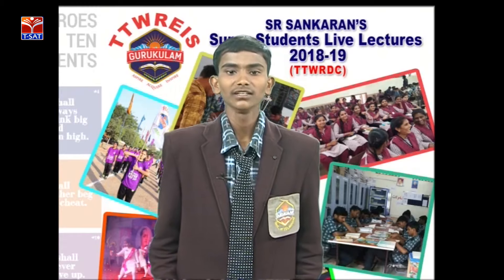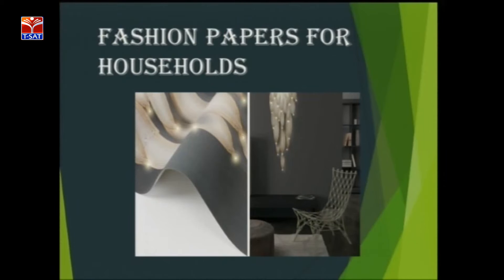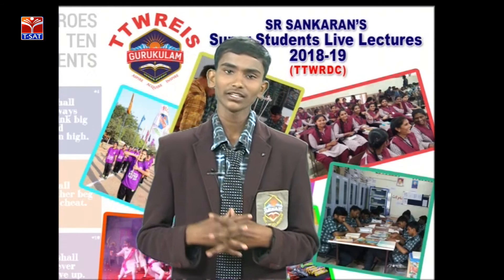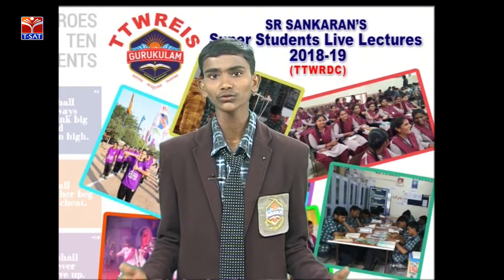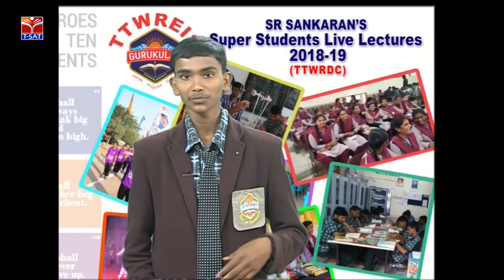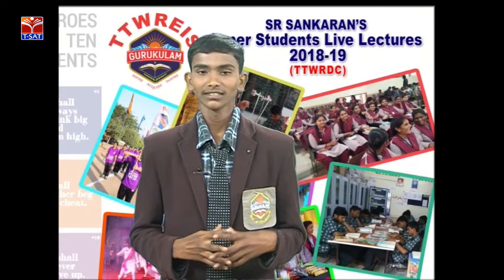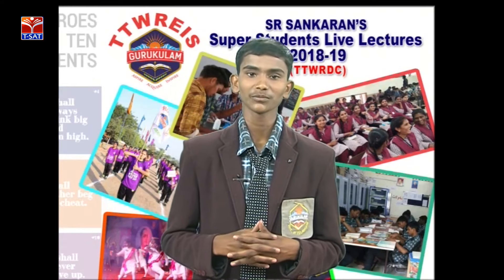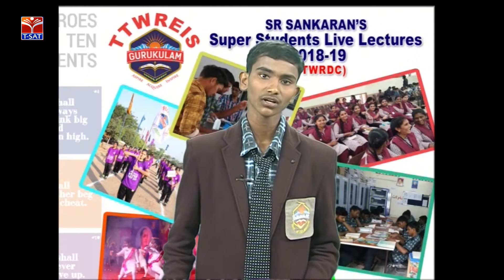The next application is fashion papers and households. For the beauty in our house, to increase the furniture appearance, we are using the light emitting diode — how beautiful it is! For the fashion purpose also we can use the light emitting diode. To increase the beautiness of our house, it may be used in higher-profile places such as police stations, head offices, and other important offices. You may see in the picture — the papers are so small but they give more color and for the appearance it is too good and beautiful.